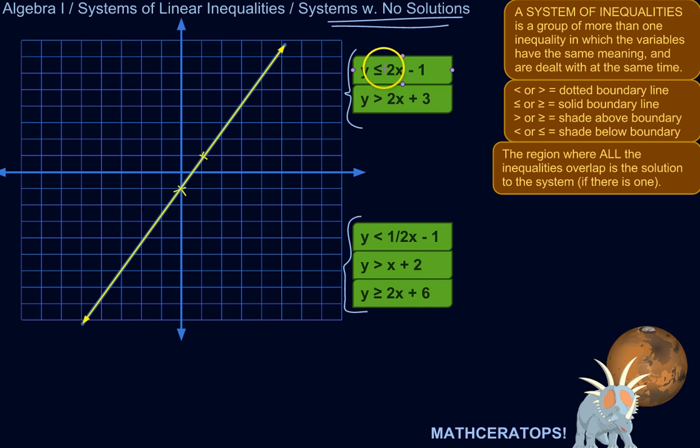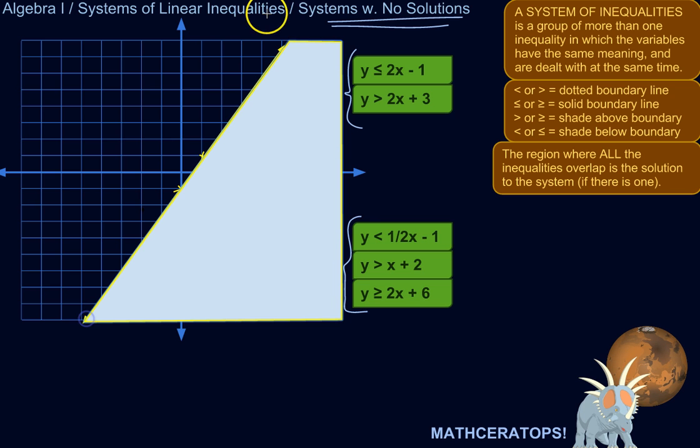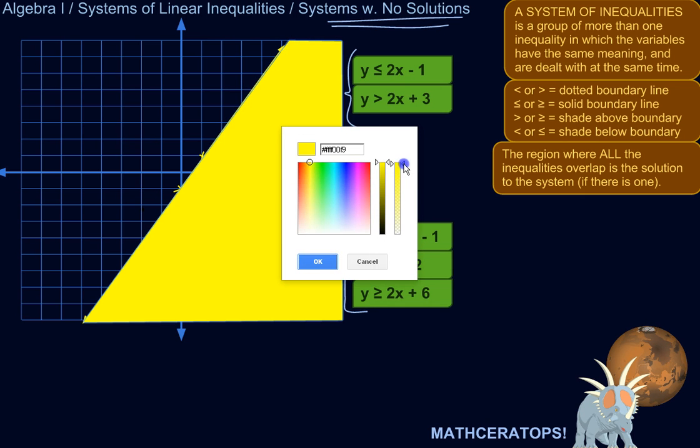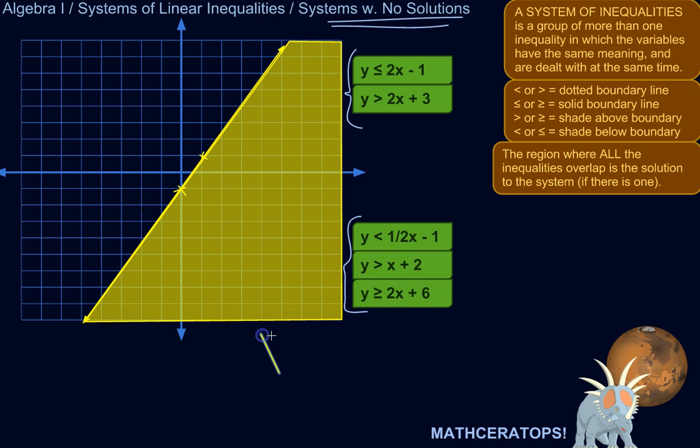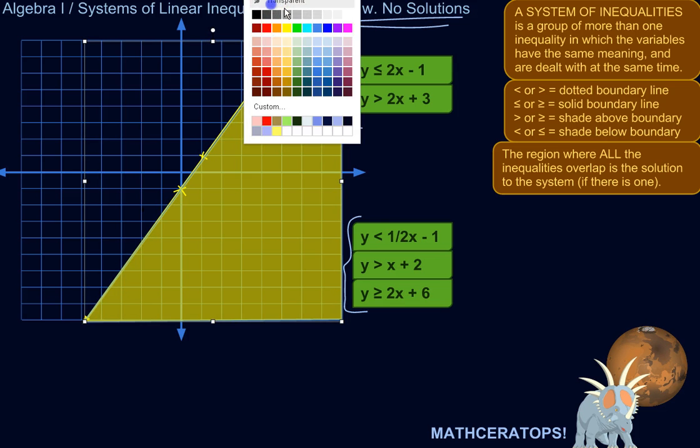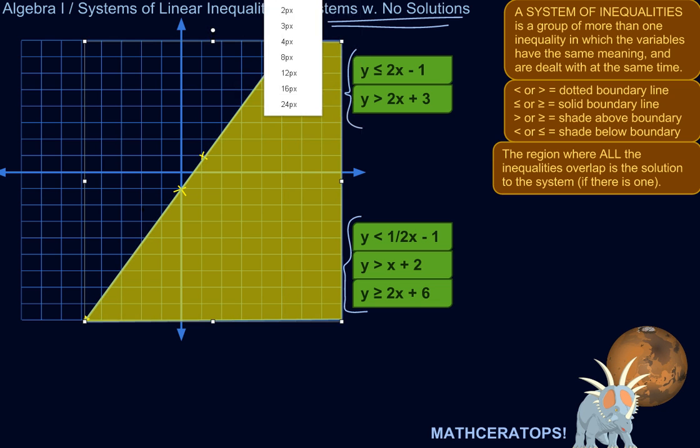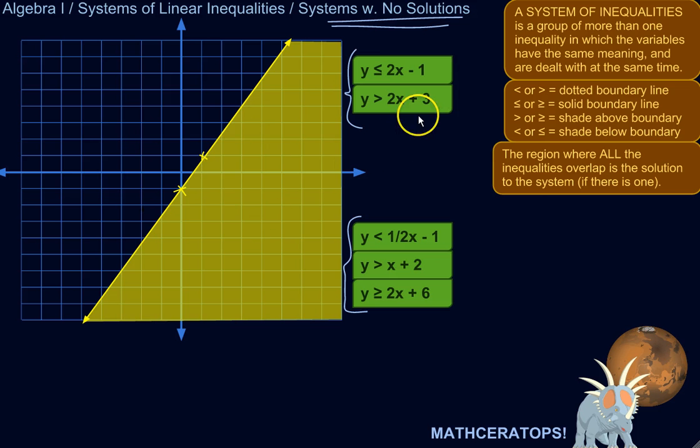Because it's less than or equal to, I'm going to leave that as a solid line. Now I'm going to shade in below the line because it's less than or equal to. So that's this first one.